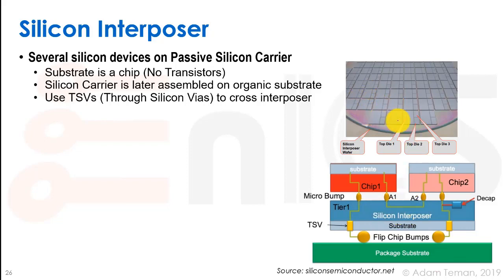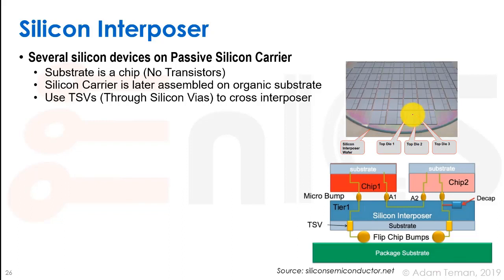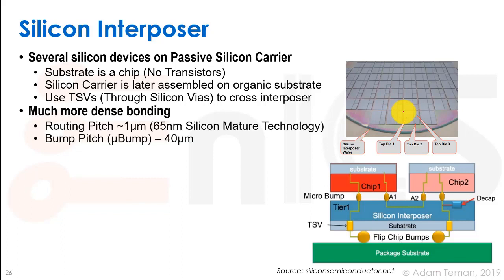Here we can see a picture of this approach. We take a wafer, and the silicon interposer is fabricated on it. Then chips that have been pre-fabricated are placed onto it and bonded with micro bumps, which are similar to regular bumps on a flip chip. After dicing the wafer, we get our system in package — multiple dies already connected to each other — and then we package them.